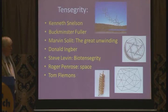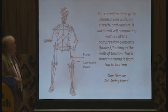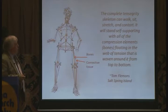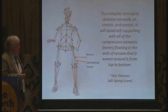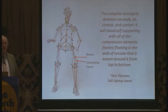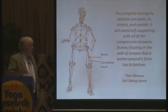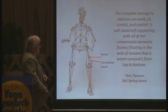Tom Flemons constructs models of the body based on tensegrity — for example, this complete tensegrity skeleton with bones and connective tissues. It can walk, sit, stretch, and contort. It stands self-supporting with all the compression elements — the bones — floating in the web of tensions woven around it from top to bottom. All the bones are supposed to float. We are not designed to be a stack of bricks. When tensegrity breaks down, we start to have joint problems, and many therapies succeed by putting length into the system and lifting the bones off each other, which is their natural state.